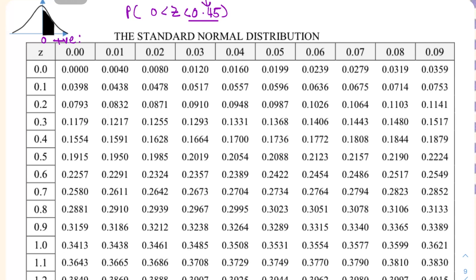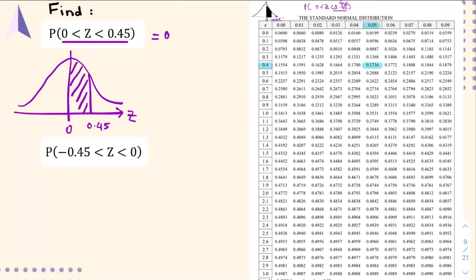The vertical part of the table gives you the first decimal place — for 0.45, you find 0.4 from the vertical part. The second decimal place is 0.05, which you look up from the horizontal top part. The intersection of the vertical and horizontal gives your answer: 0.1736.